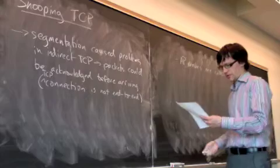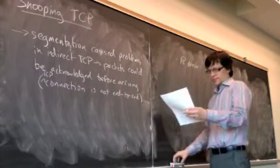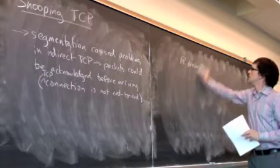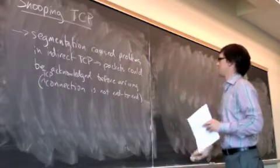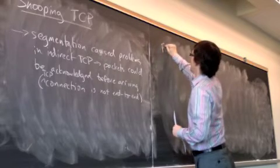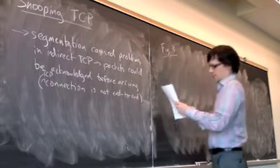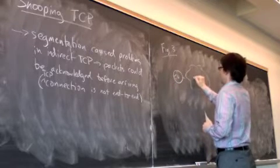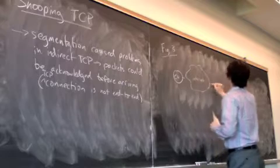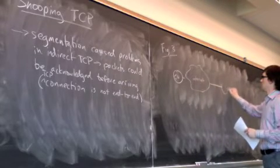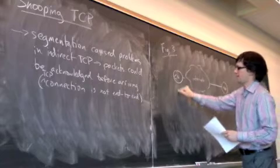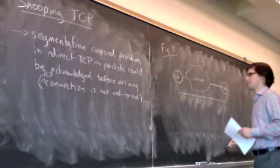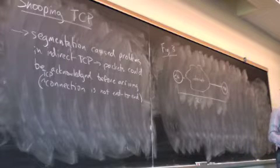So here's how snooping TCP works. Here's your figure - let's call this figure three. Now we have a corresponding node, internet, connected to the mobile node. Now the entire link runs TCP. So now we have an end-to-end link in snooping TCP.